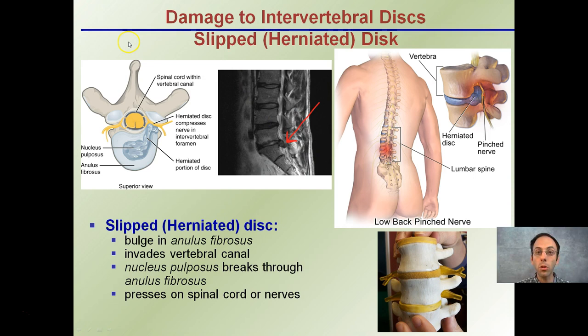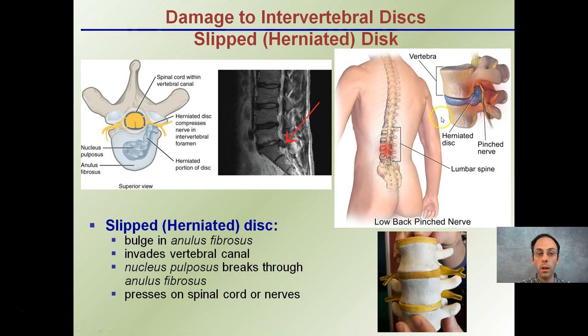Damage to the intervertebral discs causes a slipped disc or herniated disc, both extremely painful. This results in a pinching of the nerve — we never want nerves to be pinched or bone on bone. This especially occurs in the lower back, the lumbar spine, where a lot of weight is applied and significant support is occurring. This pinched nerve can cause a lot of pain, which is why it's very important to have cartilage at equal spacing between vertebrae to allow freedom of movement without a high degree of pain.